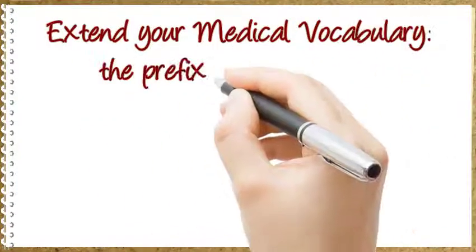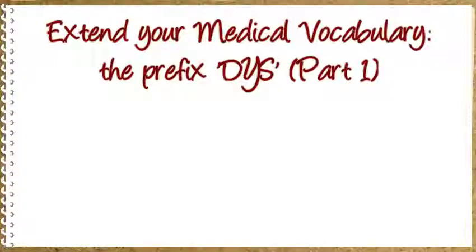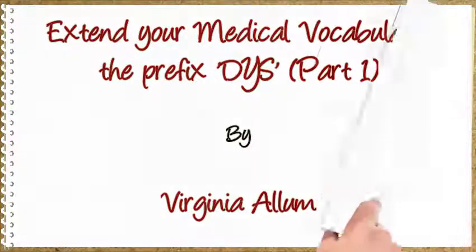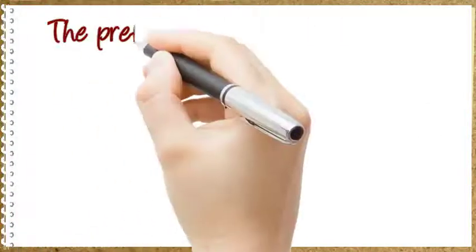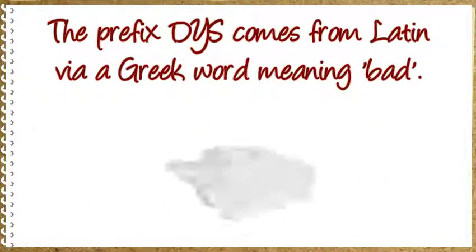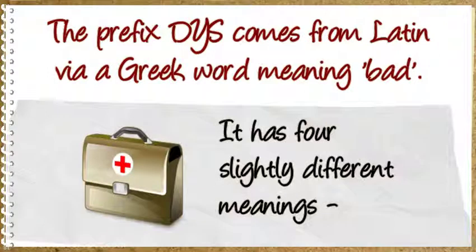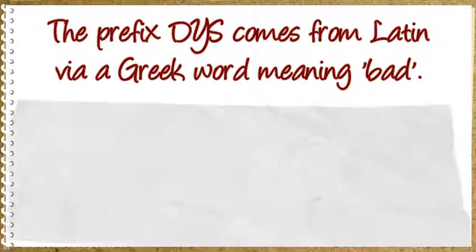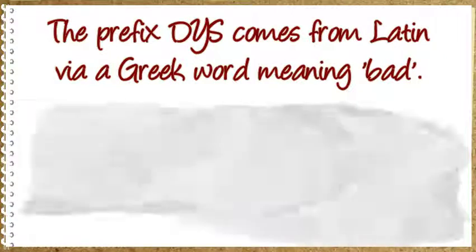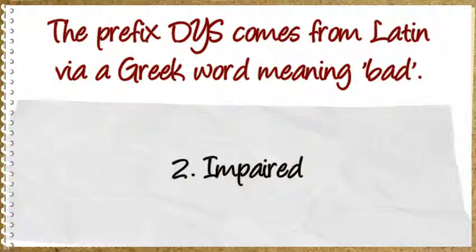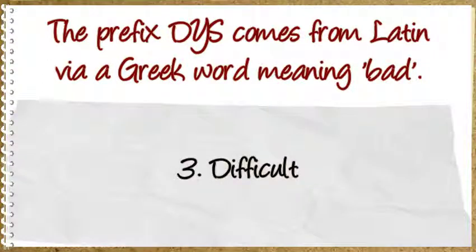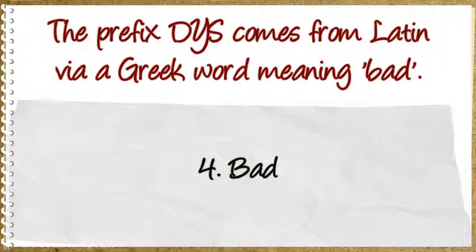Extend your medical vocabulary: the prefix dys, part one. The prefix dys comes from Latin via a Greek word meaning bad. It has four slightly different meanings: 1. Abnormal, 2. Impaired, 3. Difficult, 4. Bad.